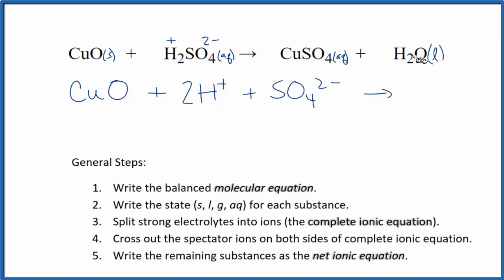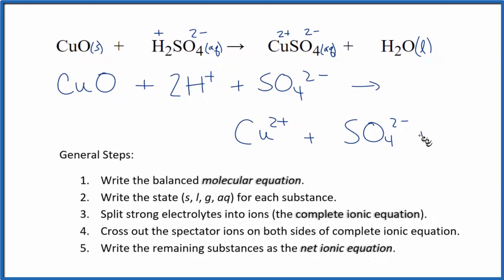So now we can write the products. Sulfate we said is 2 minus, so this copper here has to be 2 plus. And water, that's a liquid. We're not going to split that apart. So in the products we have Cu 2 plus, plus the sulfate ion, SO4 2 minus, plus the liquid water, H2O.